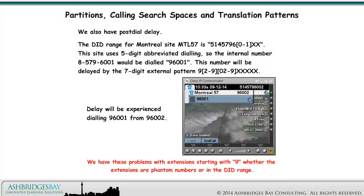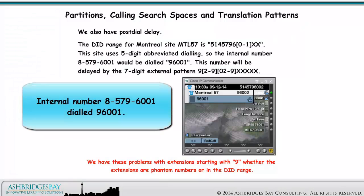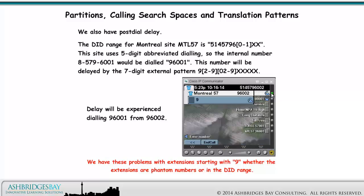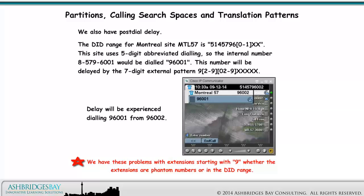We also have post-dial delay. The DID range for Montreal site MTL57 is 514-579-60XX. This site uses five-digit abbreviated dialing, so the internal number 8-57960-01 would be dialed 96001. This number will be delayed by the seven-digit external pattern 9, 2-9, 0-2-9-XXXXX. Delay will be experienced dialing 96001 from 96002. We have these problems with extensions starting with 9, whether the extensions are phantom numbers or in the DID range.